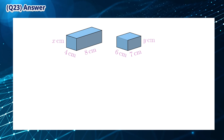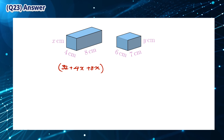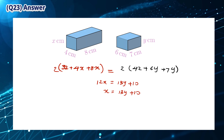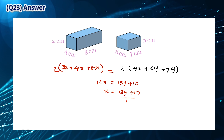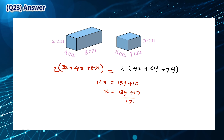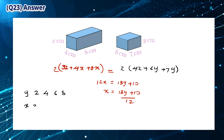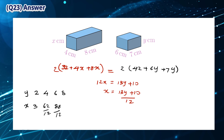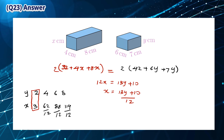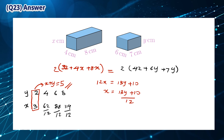Since the surface areas of the two prisms are equal, we write an equation using x and set them equal. Solving gives x equals (13y plus 10) over 12. For x to be an integer, y must be even. Checking values, the only solution is y equals 2 and x equals 3. So the only possible value of x plus y is 2 plus 3, which is 5. The answer is A.